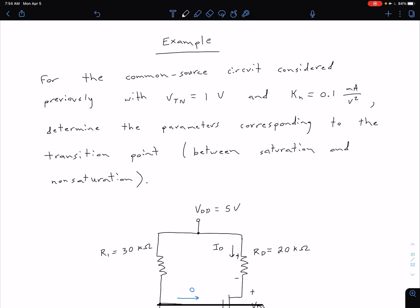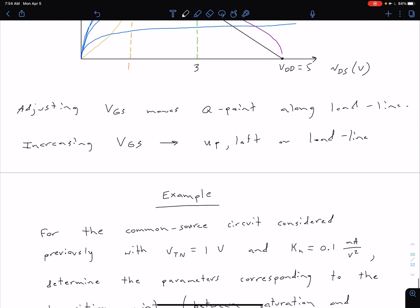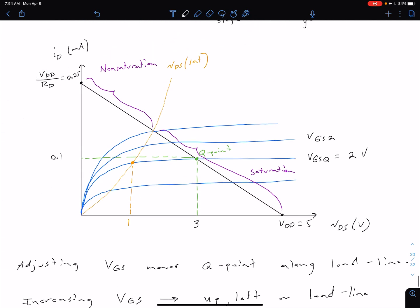Let me go back to our load line because I forgot to mention a couple things in the previous video. So what we're interested in here is this transition point as we're going from saturation to non-saturation. So we're trying to find the values that correspond to this transition point.